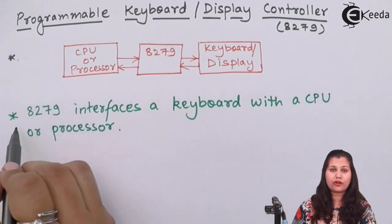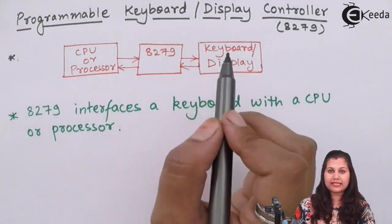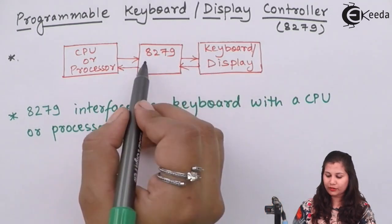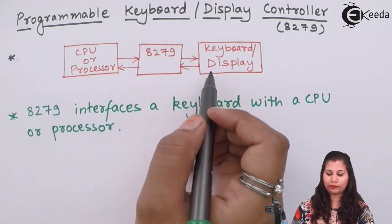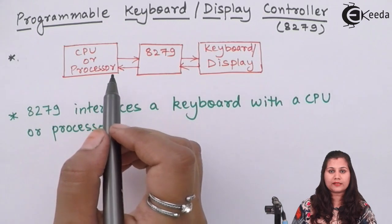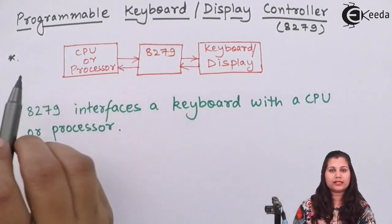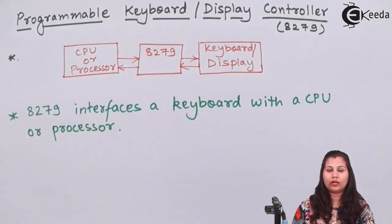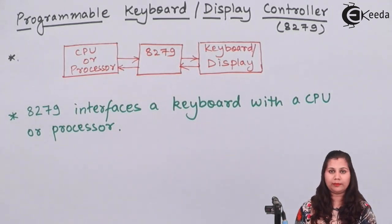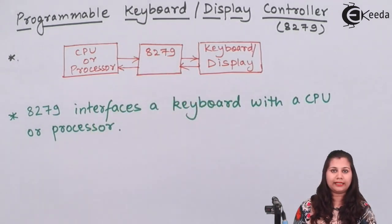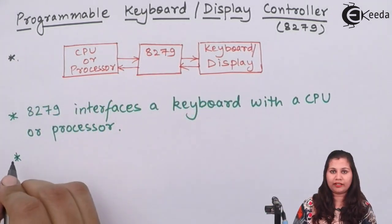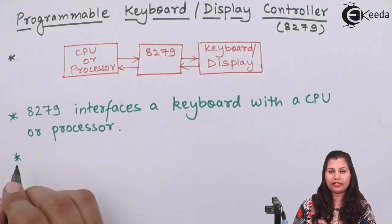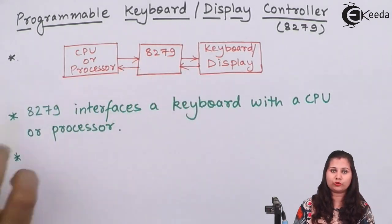The function of the 8279 is that whenever any key is pressed on the keyboard, the 8279 will scan to determine which key is pressed. If any key is pressed, it will transfer the relative response of that key to the CPU, so that the CPU gets to know which key has been pressed and can perform the associated function.